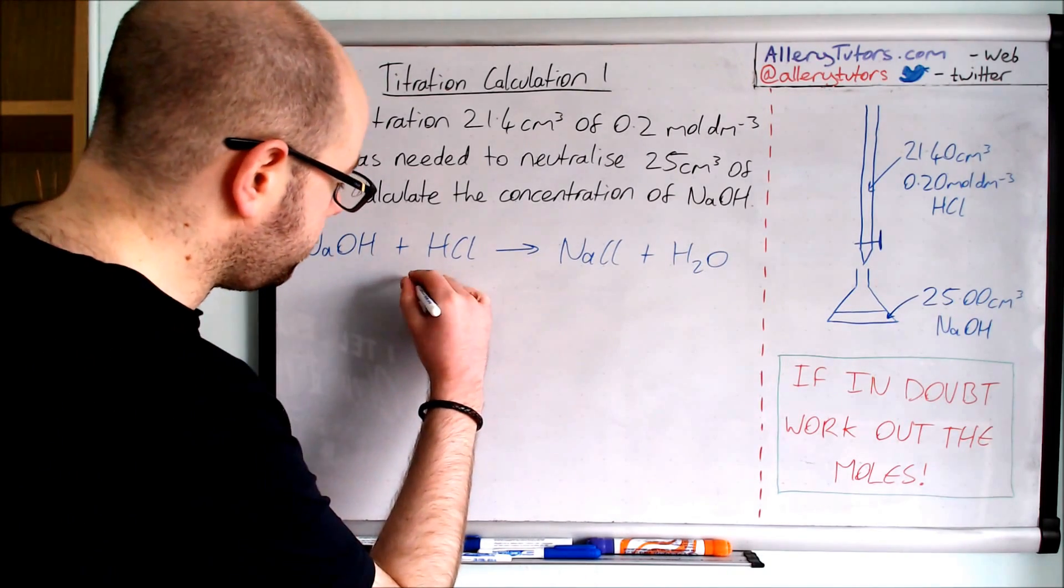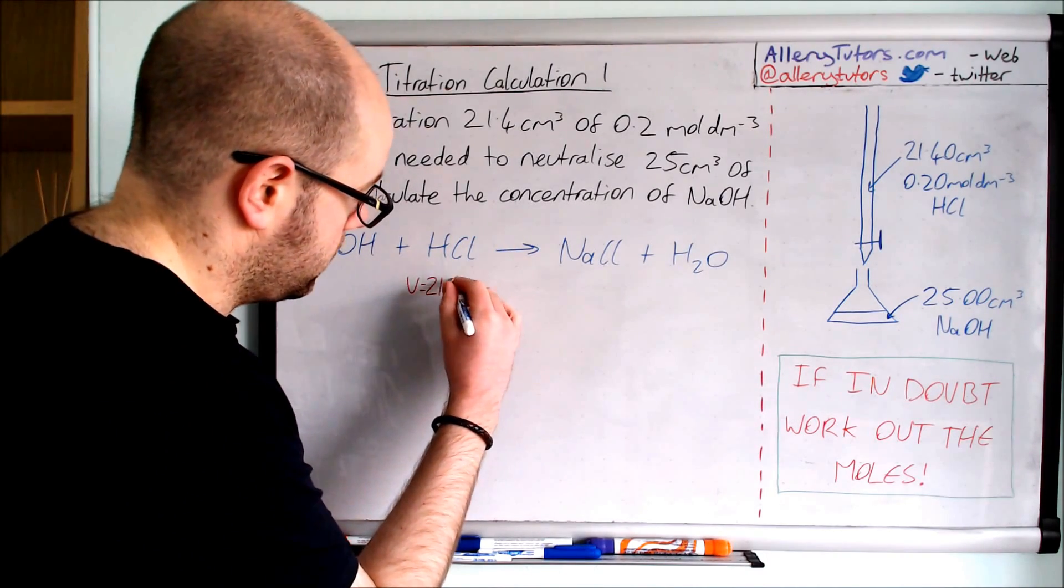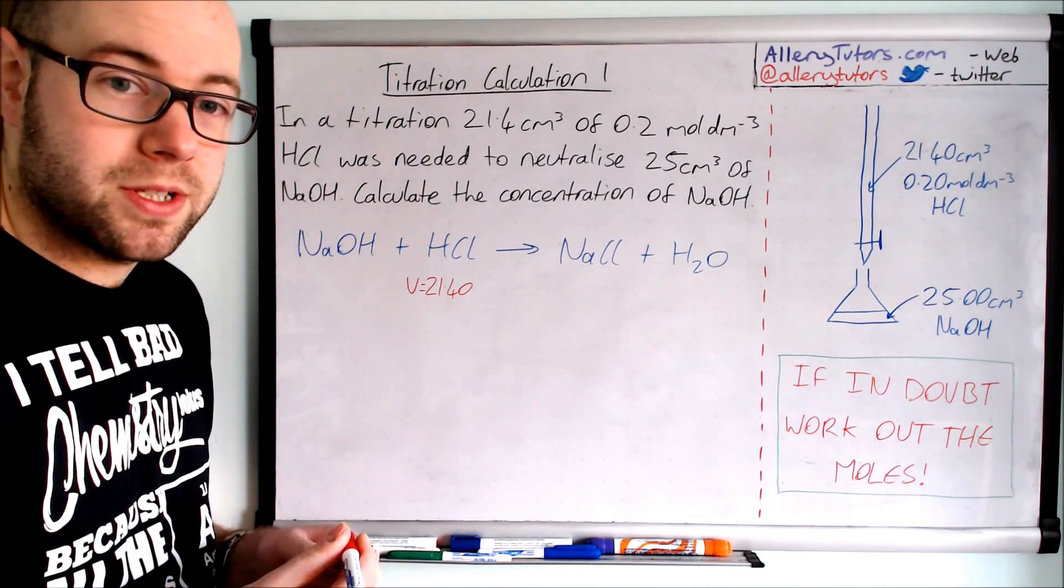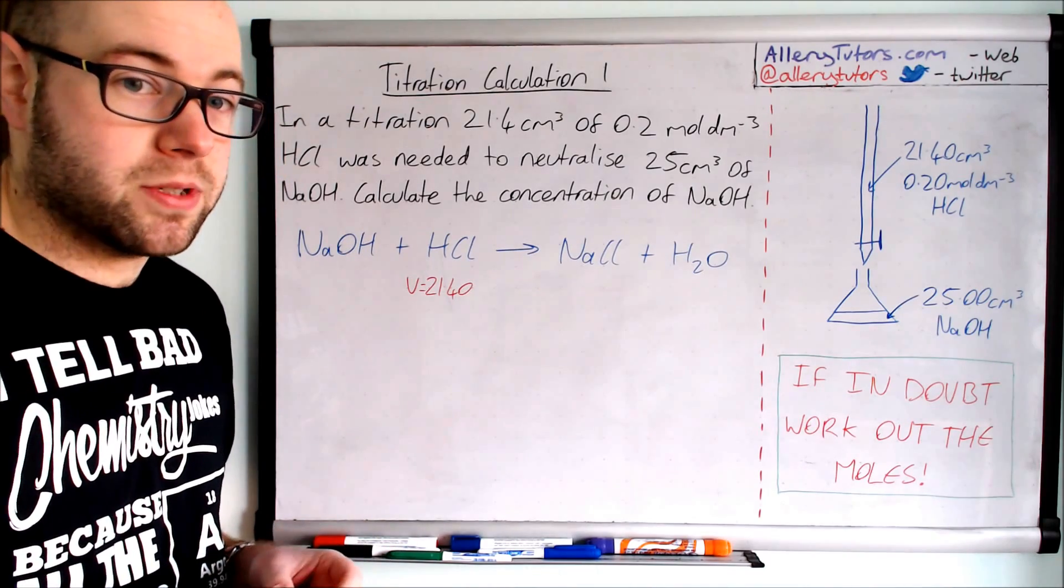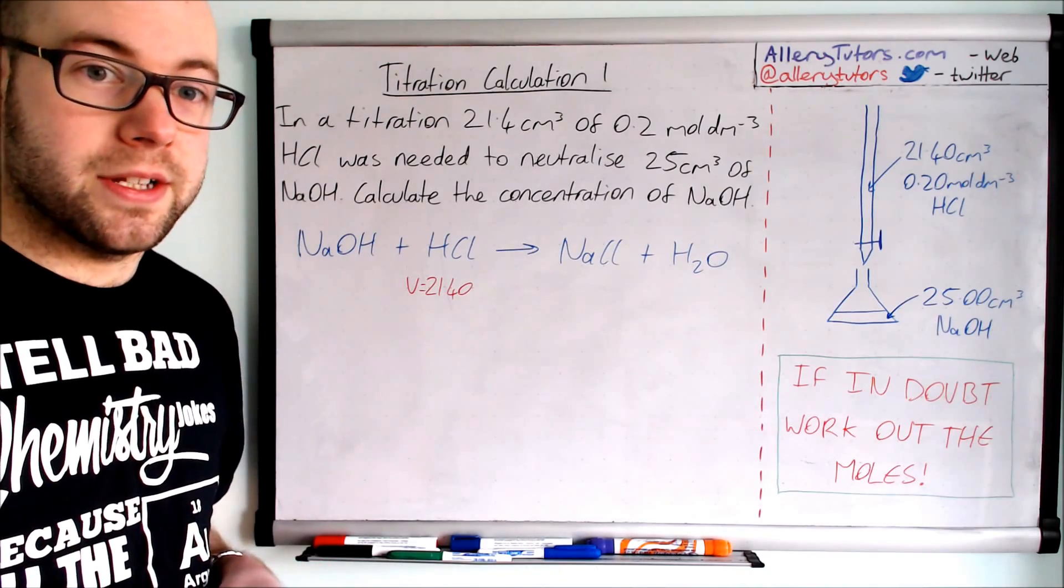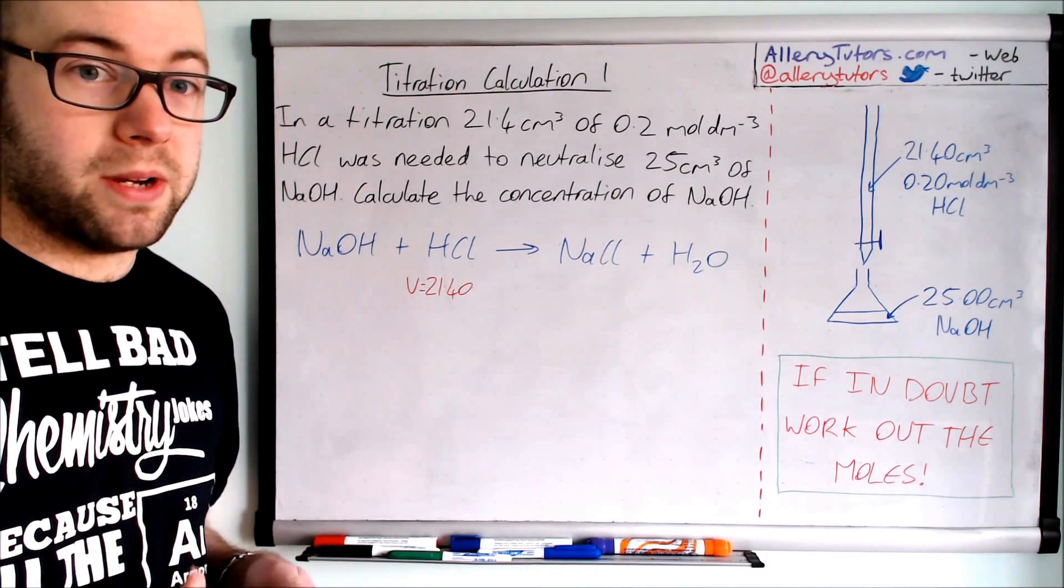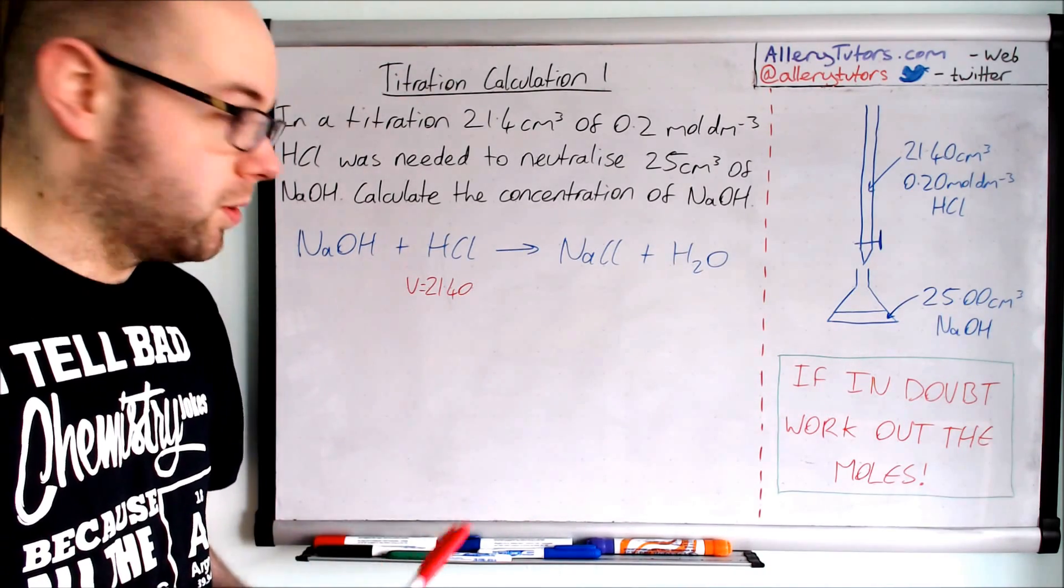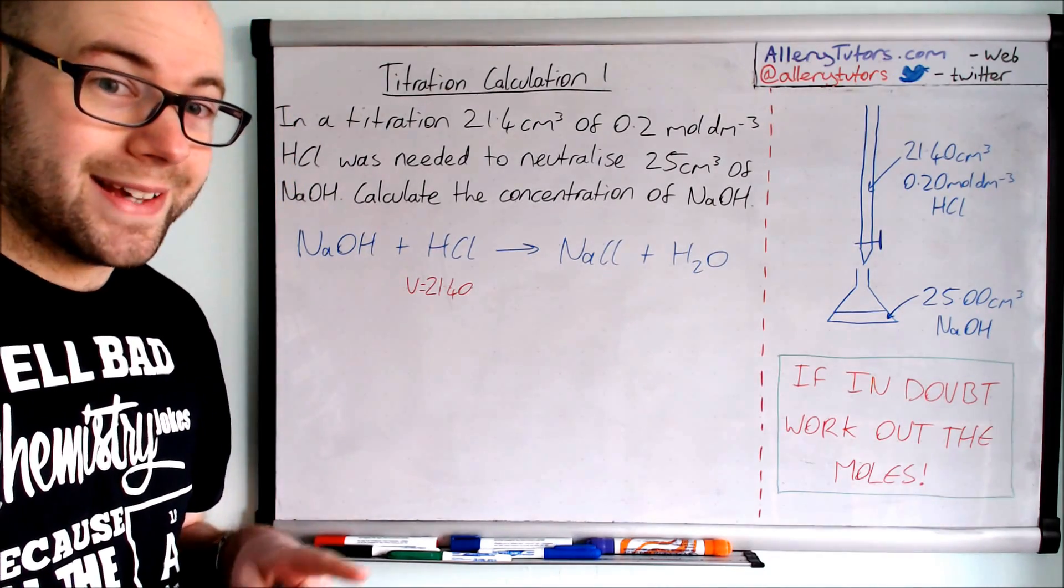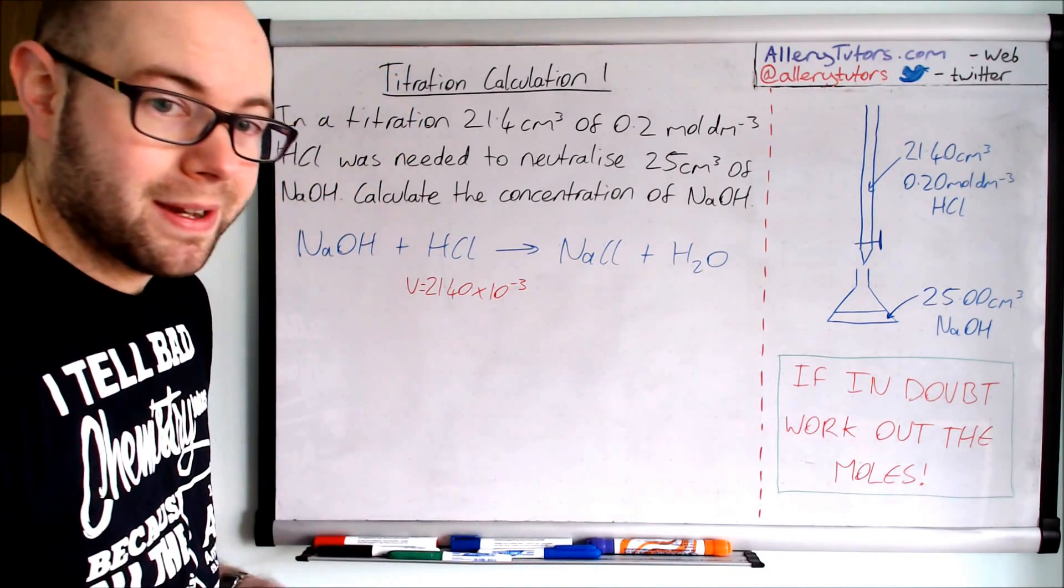For HCl, we know the volume is 21.40. Now there's a problem because this is in centimeters cubed and in chemistry we measure things in decimeters cubed. So you need to convert that into decimeters cubed. If you're not sure on how to convert units, I have done a video on converting units, so click on the link below. But to convert, you divide by a thousand, which we can write as times by 10 to the minus 3.